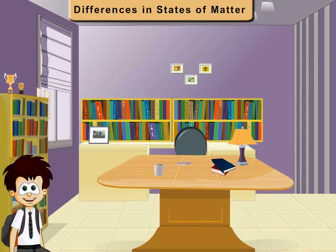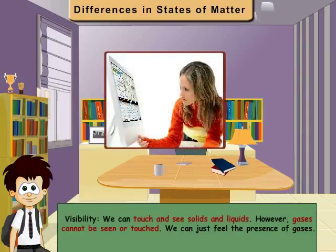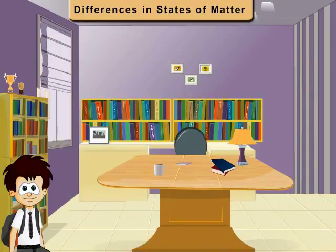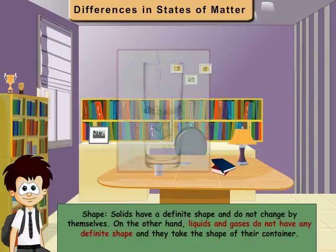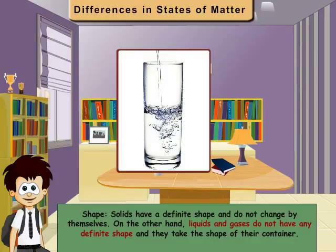Now let me tell you about the properties. Visibility: We can touch and see solids and liquids. However, gases cannot be seen or touched. We can just feel the presence of gases. Shape: Solids have a definite shape and do not change by themselves. On the other hand, liquids and gases do not have any definite shape and they take the shape of their container.